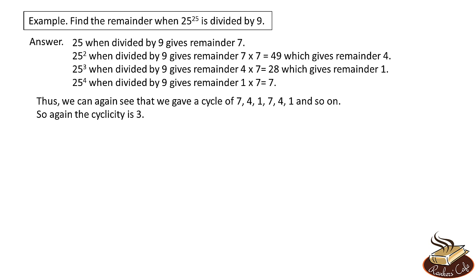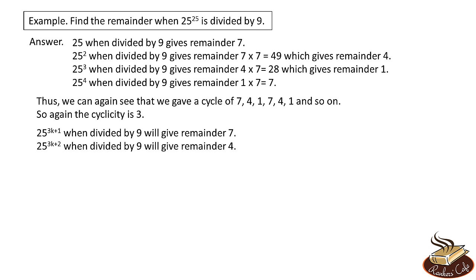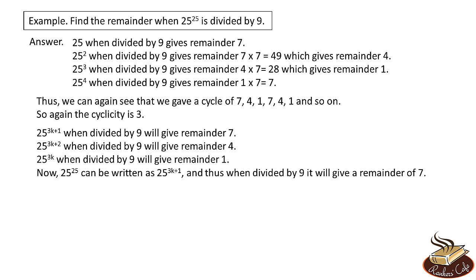So 25 raised to the power 3k+1 when divided by 9 will give remainder 7; 25 raised to the power 3k+2 when divided by 9 will give remainder 4; and 25 raised to the power 3k when divided by 9 will give a remainder of 1. Now 25 raised to the power 25 can be written as 25 raised to the power 3k+1, so when divided by 9 it will give a remainder of 7.